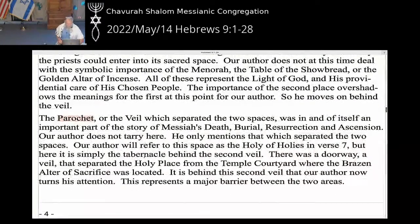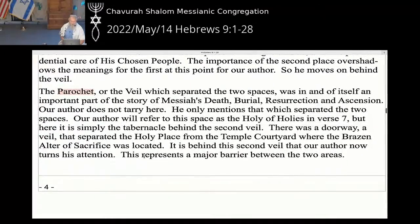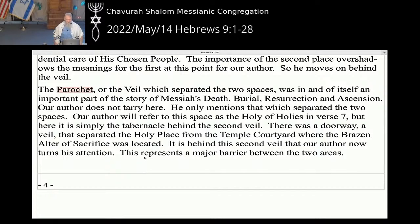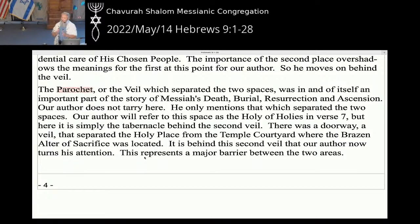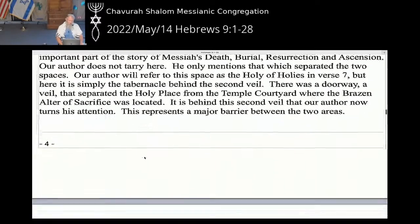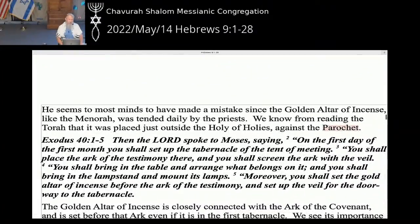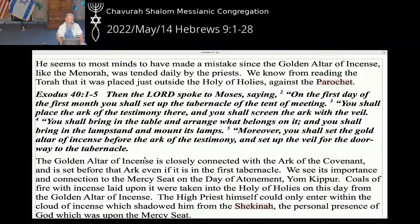The two separate spaces are in and of themselves an important part of the story of Messiah's death, burial, resurrection, and ascension. The author refers to this second space as the holy of holies in verse seven; here it is simply the tabernacle behind the second veil. This second veil represents a major barrier between the two areas. The people could come near the altar; the priest could go into the holy place; only the high priest could go into the holy of holies, only once a year. You go from a basic level of holiness to a more intense level of holiness to an ultimate level of holiness — increasing levels of holiness as you made your way to where God was.